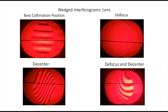Wedge shear interferograms for a lens showed a collimation position with very little aberration and an expected angled-fringe orientation for defocus. A combination of aberrations at the center, possibly including astigmatism, and another combination of aberrations induced when the lens is defocused, possibly including spherical and coma, were also observed.